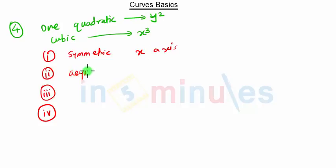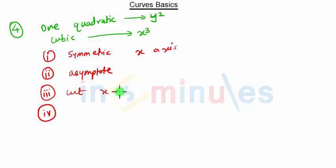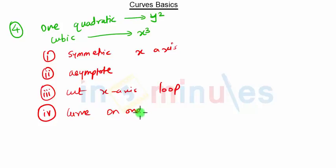For equations of the form y² = x³ or similar, these curves are always symmetric about the x-axis. Some of these curves will have an asymptote — that is, a tangent meeting at infinity. Whenever the curve cuts the x-axis at two points, it will form a loop. The curve exists on one side of the loop, not both sides. We will take an example for this.